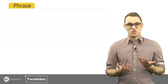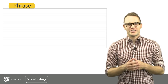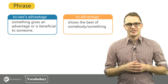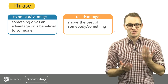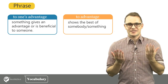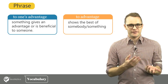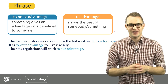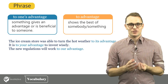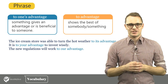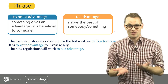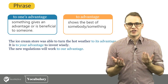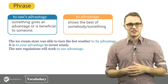Advantage is often used with 'to' as well, as in the phrases 'to one's advantage' and 'to advantage.' If something is to one's advantage, it means that something gives an advantage or is beneficial to someone. Here are some examples: The ice cream store was able to turn the hot weather to its advantage. It is to your advantage to invest wisely. Or: the new regulations will work to our advantage.